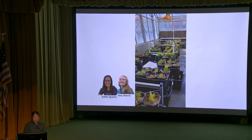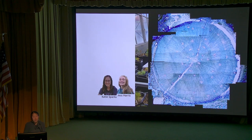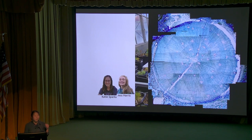Master's students Katie Sparks and Jess Harris also looked at the effect of drought on high elevation pine species. They employed a more gradual drought method and measured various physiological variables including photosynthesis. They also examined xylem anatomy - the structure of plants responsible for water transport. Looking at cross-sections of stems under a microscope, we can measure traits of the xylem to compare how a species will respond to drought.